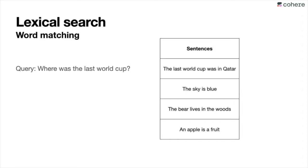To show you how lexical search works, imagine that you have a query — say, 'Where was the last World Cup?' To find the response, you have a dataset of sentences, let's say just these four. The idea is to search in the dataset for the answer, or at least the closest thing to an answer. The possible answers are: 'The last World Cup was in Qatar,' 'The sky is blue,' 'The bear lives in the woods,' and 'An apple is a fruit.' Lexical search works by word matching — it looks at which words from the query appear in the answer and counts them.